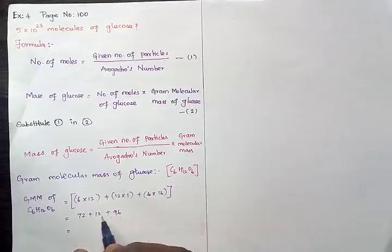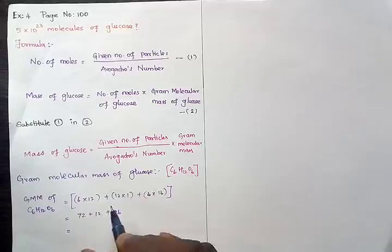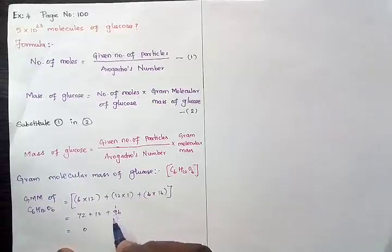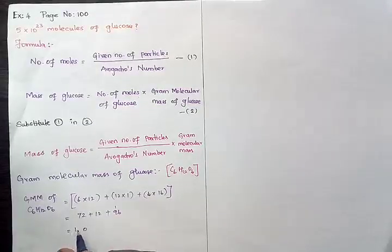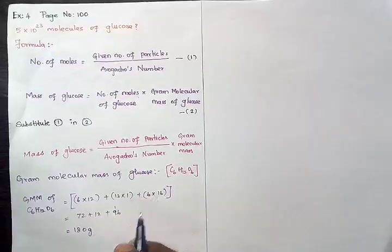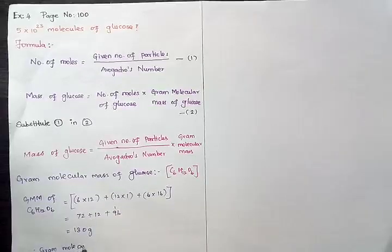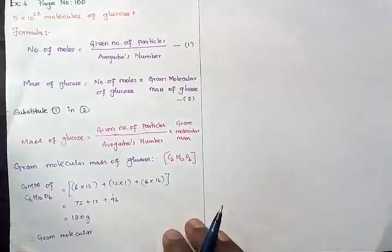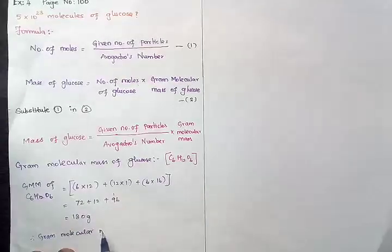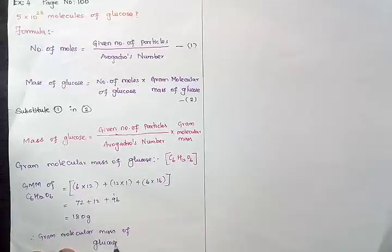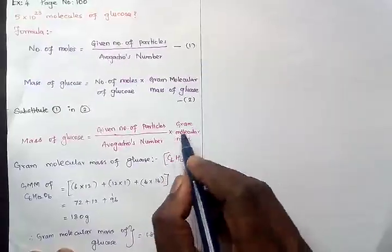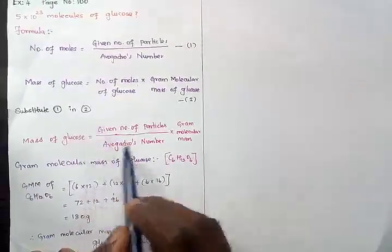Adding those up: 72 + 12 + 96. Let's calculate step by step: 72 + 12 = 84, 84 + 96 = 180. So the gram molecular mass of glucose is 180 grams. Now this part is complete — let us go to the main calculation.